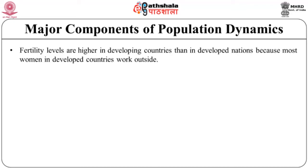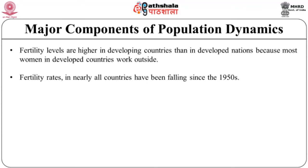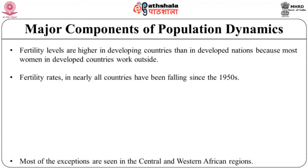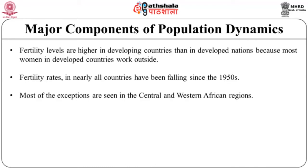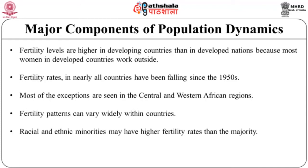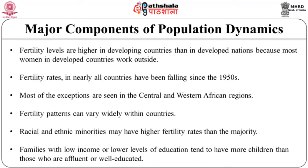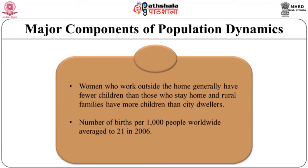Because most women in developed countries work outside the home, tend to marry later, use contraception and undergo abortions to delay or prevent childbearing, fertility rates in nearly all countries have been falling since the 1950s — with most exceptions in Central and Western African regions. Fertility patterns can vary widely within countries: racial and ethnic minorities may have higher fertility rates, low-income or less-educated families tend to have more children, and rural families have more children than city dwellers. The number of births per thousand people worldwide averaged 21 in 2006, ranging from lows of 8-9 in Northern and Western Europe to 50 or more in some West African nations.